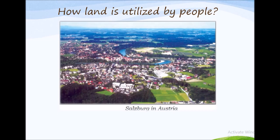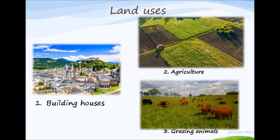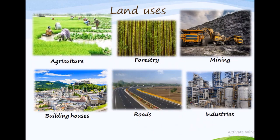Take a look at this picture. This is Salzburg in Austria. Can you see how the land here is used in many different ways? It is used for building houses, for agriculture, and for grazing animals, and so much more. So land is used for different purposes — agriculture, forestry, mining, building houses and roads, and even setting up of industries. These activities are collectively termed as land use.